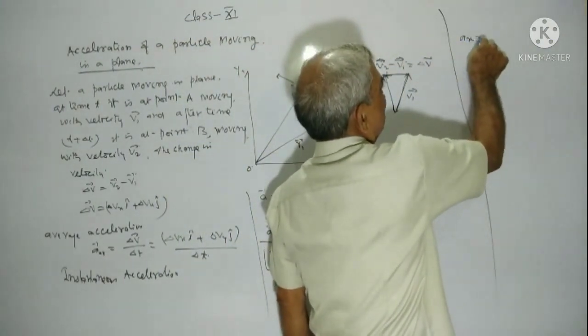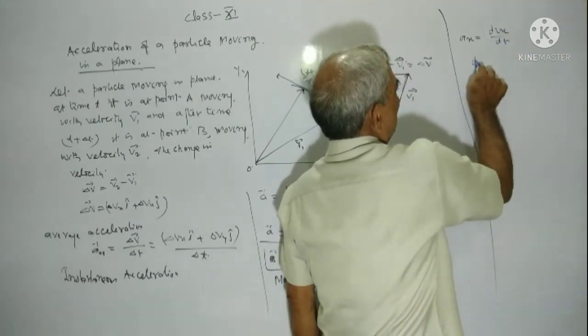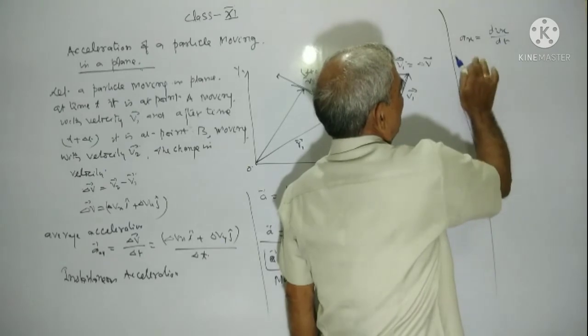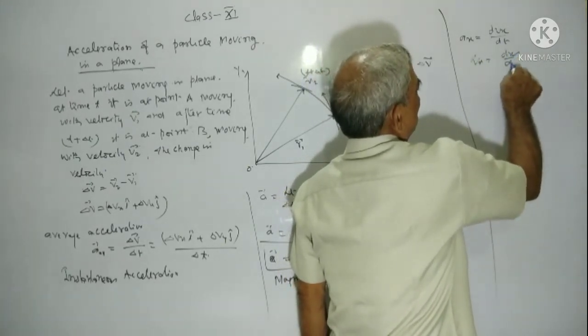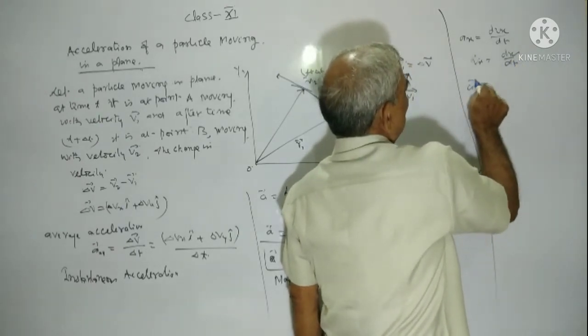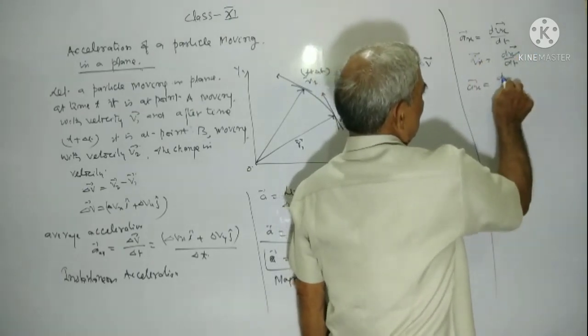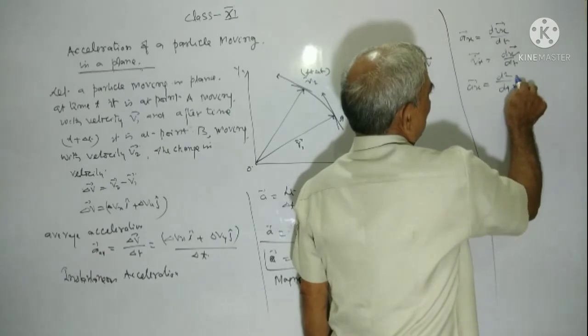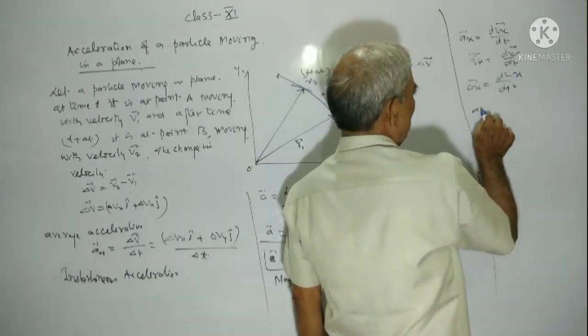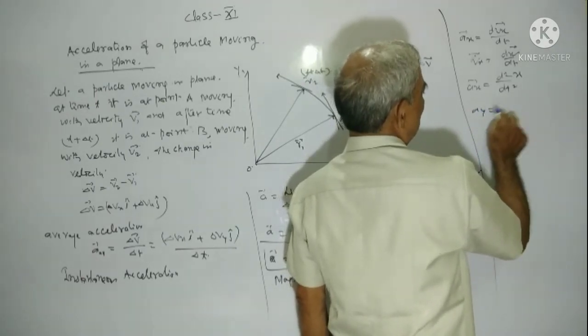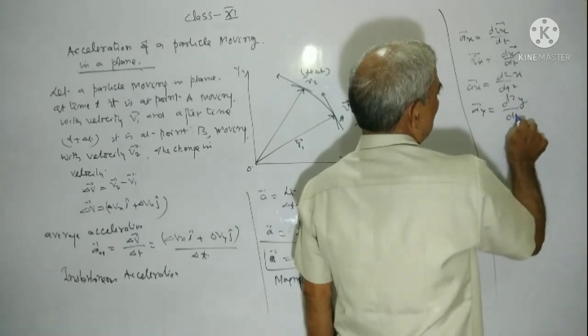Ax equal to dVx upon dt, or Vx equal to dx upon dt. So we can write Ax as d²x upon dt². Similarly, Ay can be written as d²y upon dt².